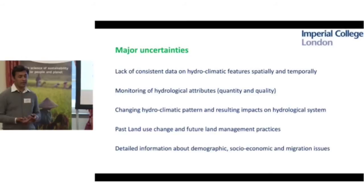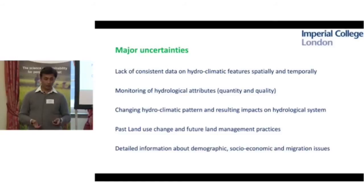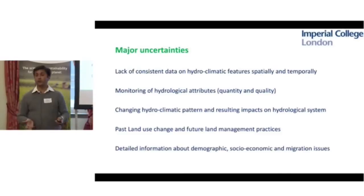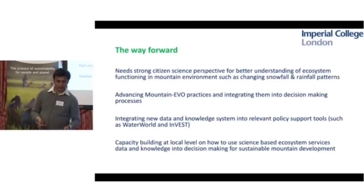In mountain environments, major uncertainties include lack of consistency in data and hydrological station monitoring. Without mobilizing local communities, we cannot track changing hydroclimatic patterns and past or future land use practices. We also lack detailed information about demographic, socioeconomic, and migration issues, which are rapidly evolving as major uncertainties for ecosystem services management.